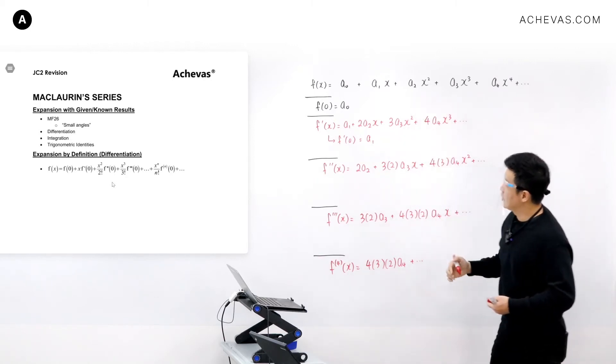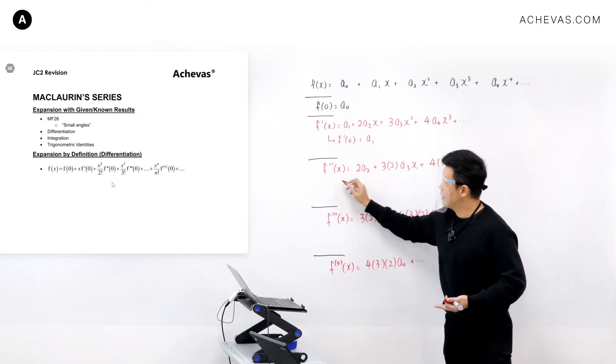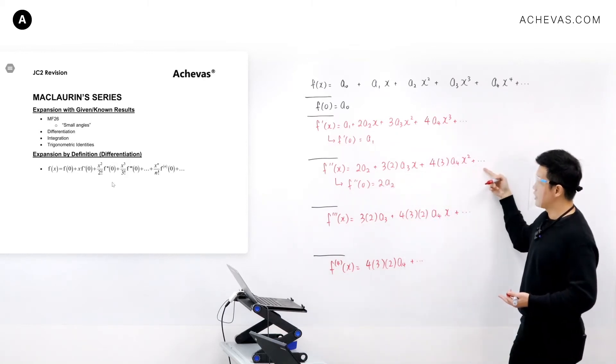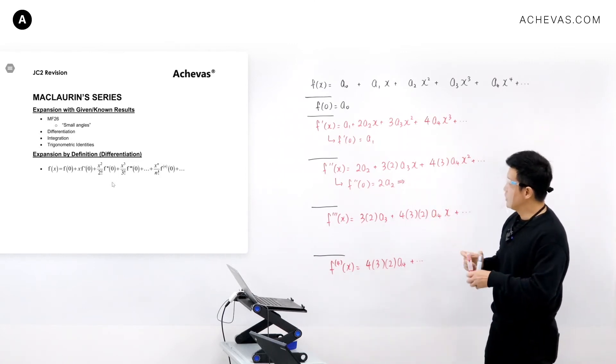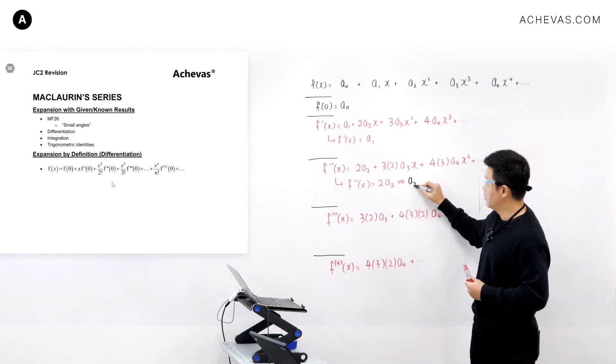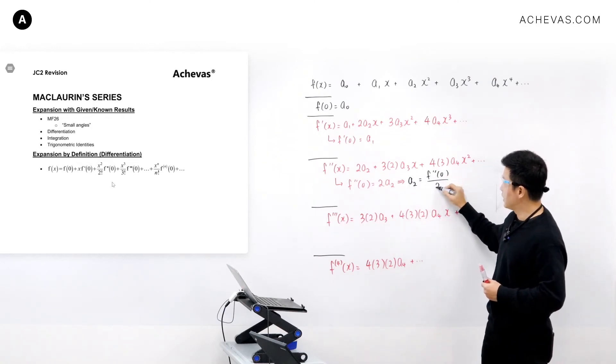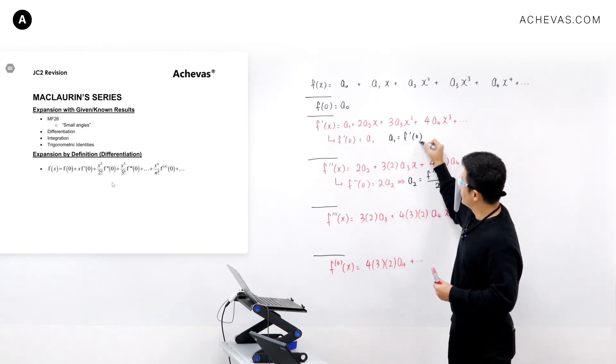To find the coefficient of the third term, I'm going to do the same thing. I will differentiate it one more time and let x equal 0. This is going to be 2a2, because the rest of the terms will become 0. From here, I can find a2, which is f''(0) divided by 2.